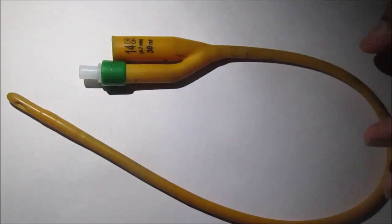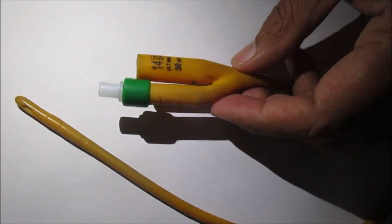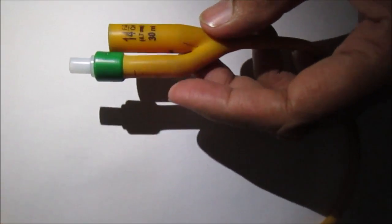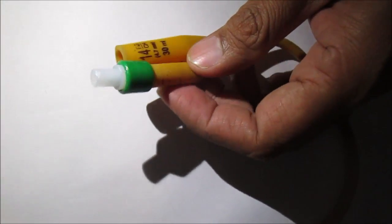There are many ways to treat the retained catheter. Before going invasive, the first one is that you cut the valve.